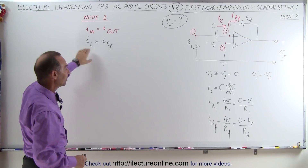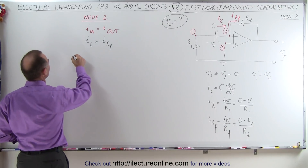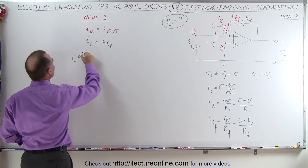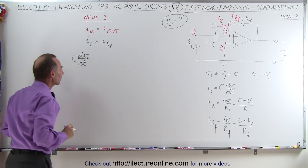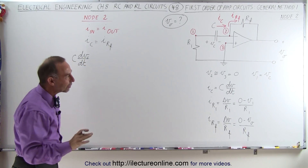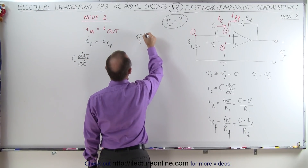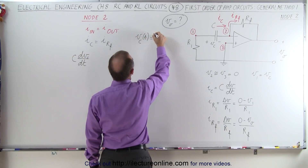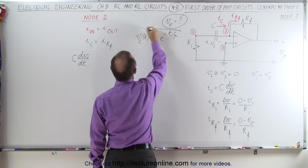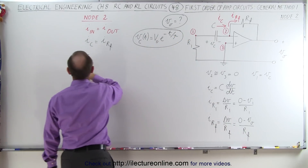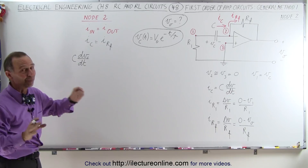We have an expression for the current through the capacitor — we know that's going to be equal to the capacitance times dv across the capacitor over dt. The voltage across the capacitor was found in the previous video: it's equal to the initial voltage times e to the minus t over tau. So we're going to need to plug that in here, but first we have to take the derivative of that with respect to time.